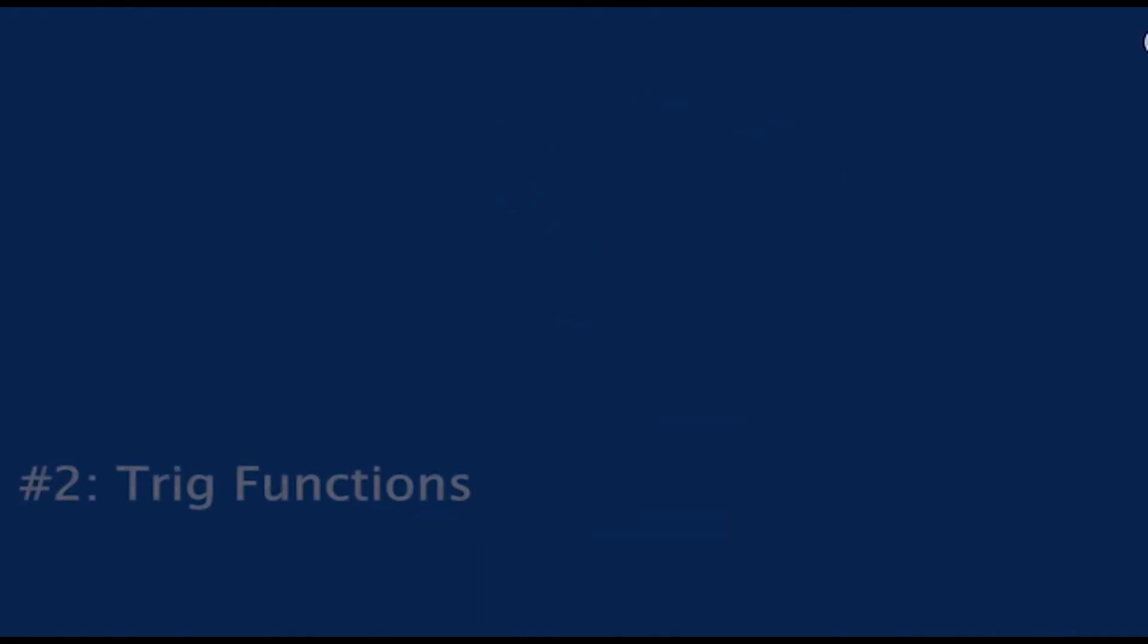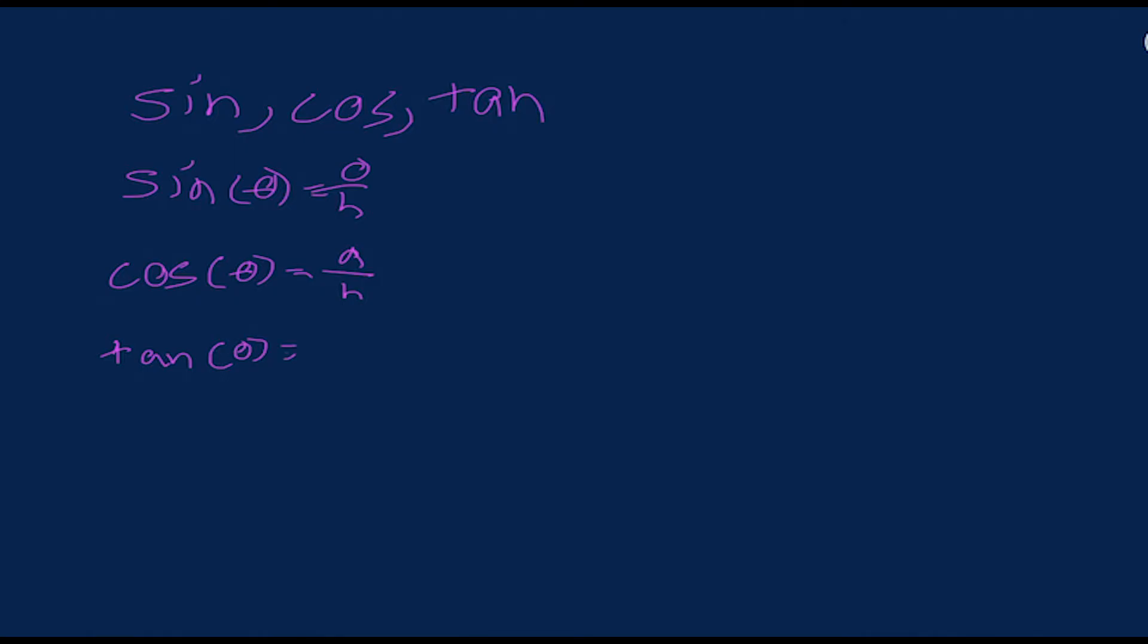Now the next aspects of trigonometry that are important to understand are, of course, the trig functions themselves. These are sine, cosine, and tangent. As most of you probably know from SOHCAHTOA, sine equals opposite over hypotenuse, cosine of theta equals adjacent over hypotenuse, and tangent of theta equals opposite over adjacent. Now what does this mean in the real world? Well, theta is just an angle, and then opposite refers to the side opposite of the angle, and adjacent refers to the side that is touching the angle that is not the hypotenuse.